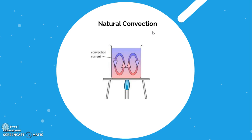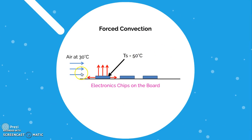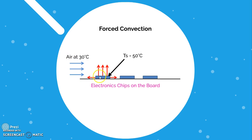When there is no external agency and particle movement is due to density variations, it is called natural convection. The second type involves an external agency. For example, consider an electronic circuit board with chips generating heat. Air at 30°C is blown over it by some external system, forcing the air molecules to move over the chips, absorb heat, and carry it away. Since the motion is driven by an external force rather than density variations, this is known as forced convection.